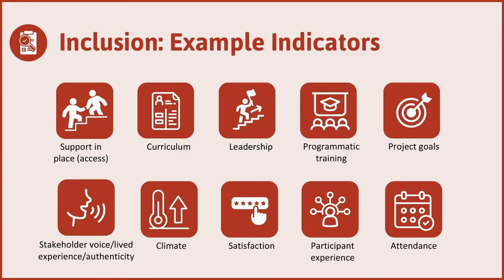Some sample indicators that can ultimately be turned into metrics: looking at support that are in place or access, looking at curriculum and making sure it's accessible and that there's representation for multiple participants — that they can see themselves in the curriculum. Looking at leadership and their efforts for inclusivity, looking at training for those who are running the program, looking at project goals — is being inclusive explicitly a goal? Looking at the extent to which stakeholders' voices are included, and that those who are participating can be authentic.